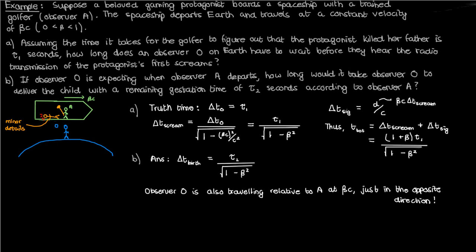This is why the answer is delta_t_birth and not the simple gestational time tau_2. This is a fairly standard time dilation problem with a couple of twists that can trick you if you didn't read the question properly.